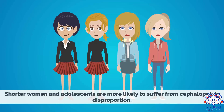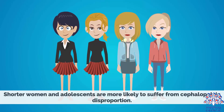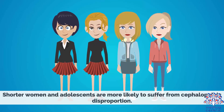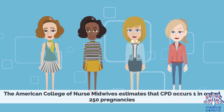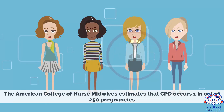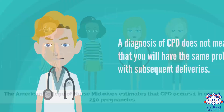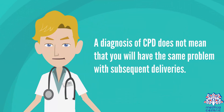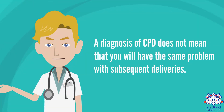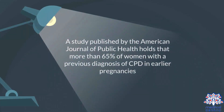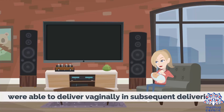Shorter women and adolescents are more likely to suffer from cephalopelvic disproportion. The American College of Nurse Midwives estimates that CPD occurs 1 in 250 pregnancies. A diagnosis of CPD does not mean that you will have the same problem with subsequent deliveries. A study published by the American Journal of Public Health found that more than 65% of women with a previous diagnosis of CPD were able to deliver vaginally in subsequent pregnancies.